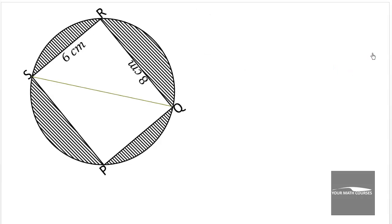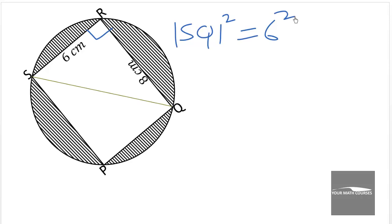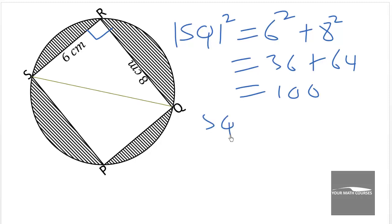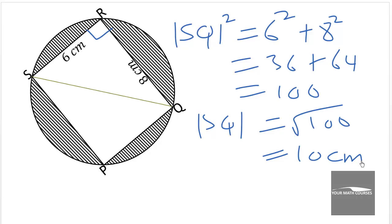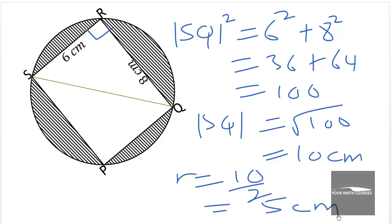We join the diagonal SQ, which becomes the hypotenuse of right-angle triangle SQR. By Pythagoras' theorem, SQ squared equals SR squared plus RQ squared, giving us 36 plus 64, which equals 100. So SQ equals the square root of 100, which is 10 cm. The diameter is 10 cm, so the radius equals 10 over 2, which is 5 cm.